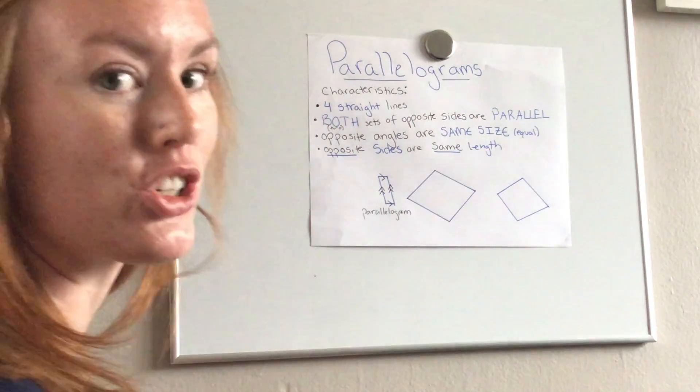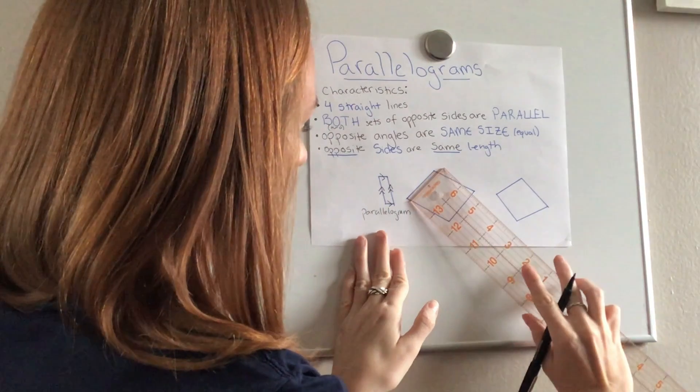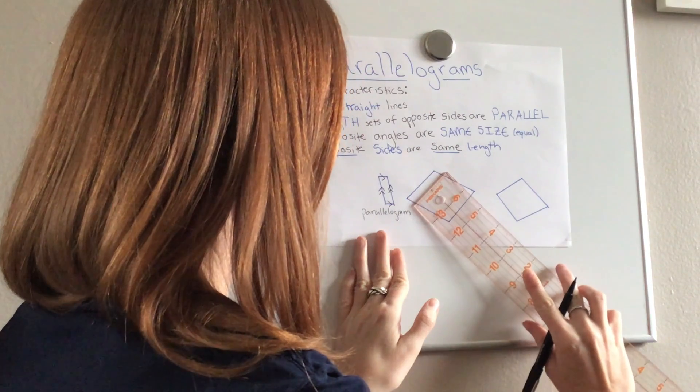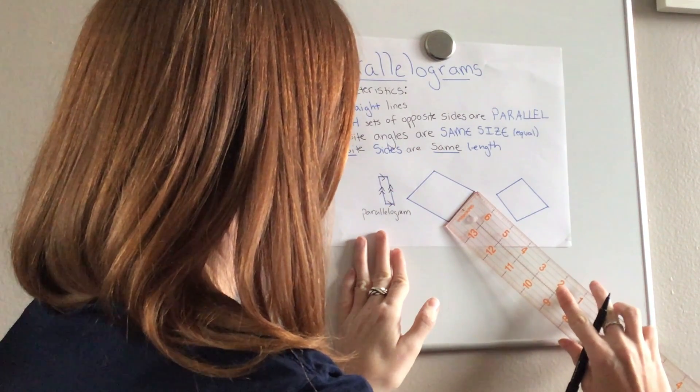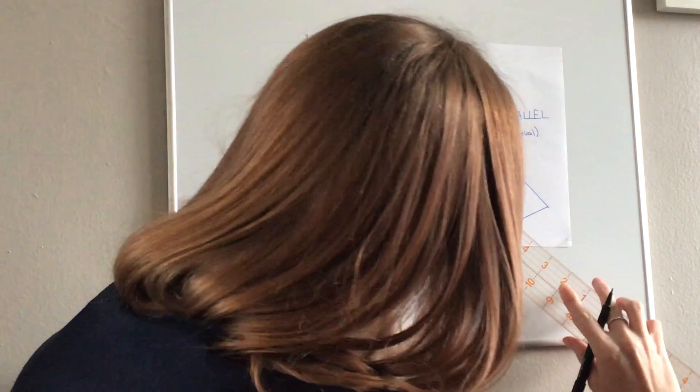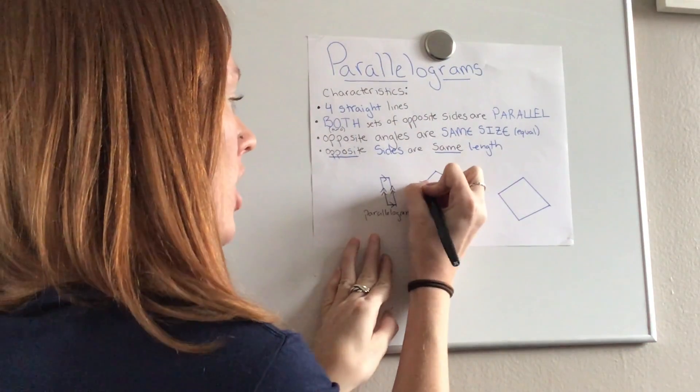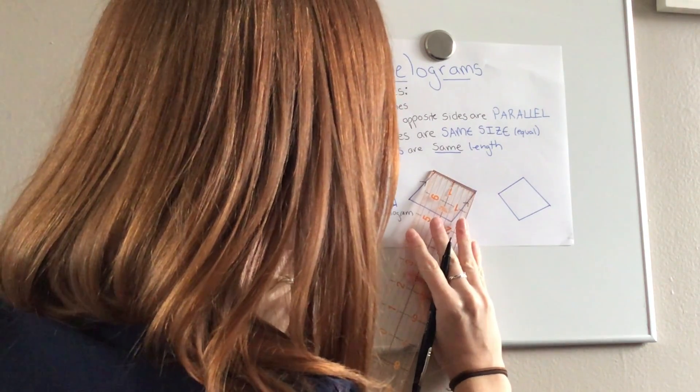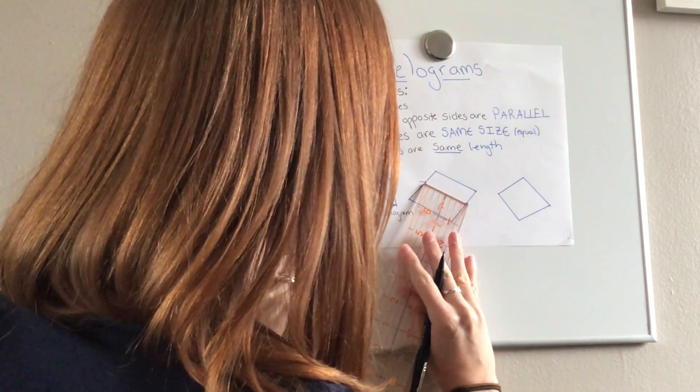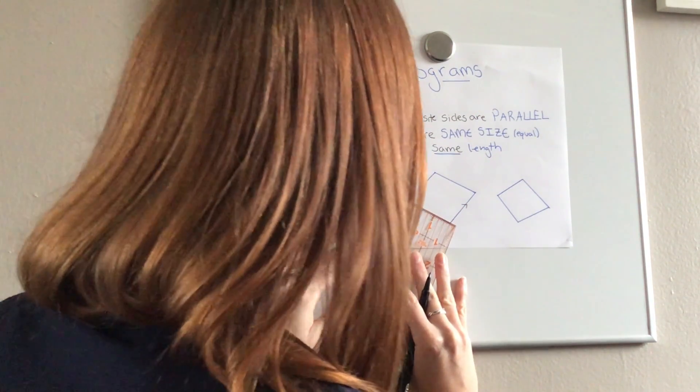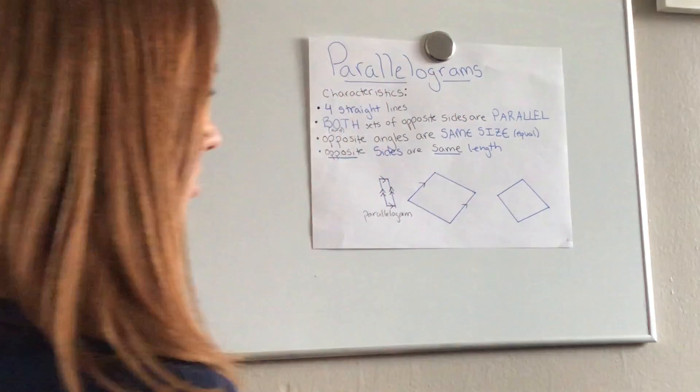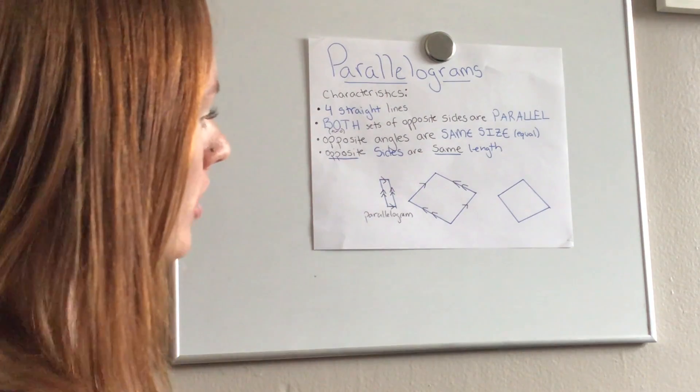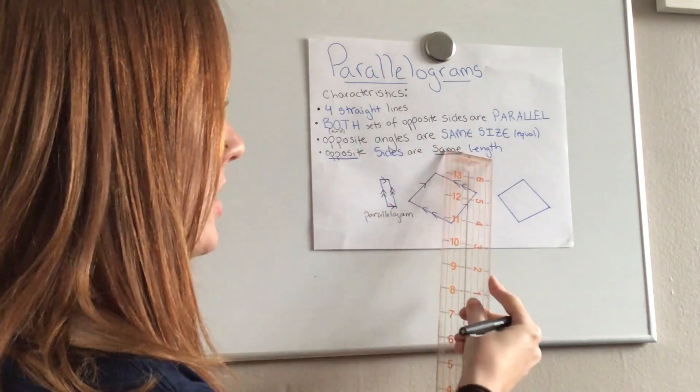Now let's check this middle structure. Put my straight edge here, line it up, slowly move it down, and it matches. So these two sides are parallel to one another. Same here, put this up, slowly bring it down, they're parallel to one another as well. Now I could measure to make sure that they're the same size.